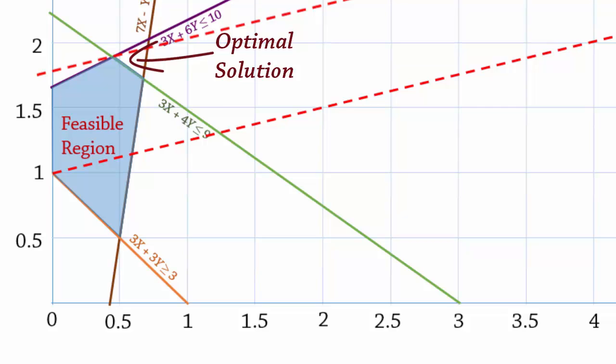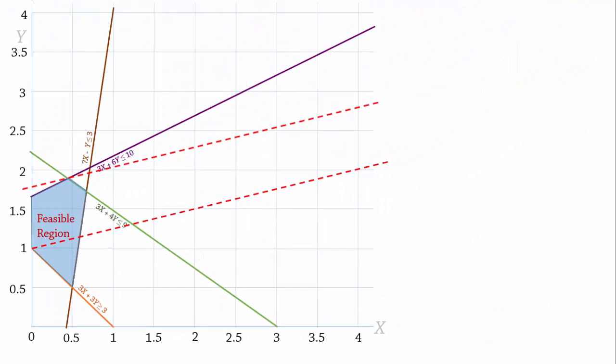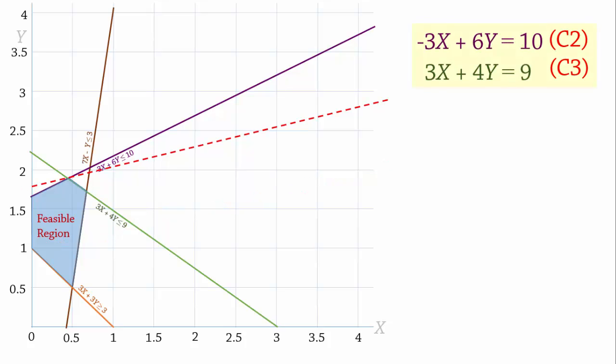Let us now solve these two lines simultaneously to determine the coordinates at that point. Here are the equations. Since the coefficients of x in the two equations are negative 3 and positive 3 respectively, we can simply add the two equations to eliminate x. So negative 3x cancels 3x. 6y plus 4y gives 10y. And 10 plus 9 gives 19. On dividing both sides by 10, we have y equals 1.9.